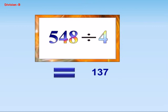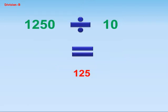Five hundred and forty-eight divided by four equals one hundred and thirty-seven. One thousand two hundred and fifty divided by ten equals one hundred and twenty-five.